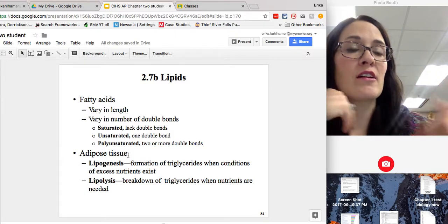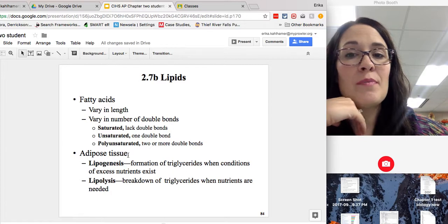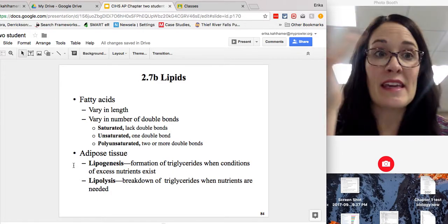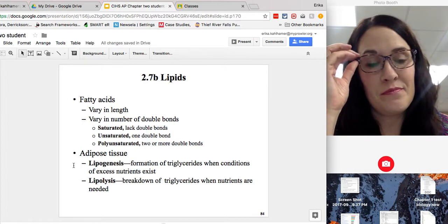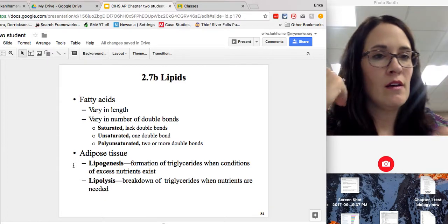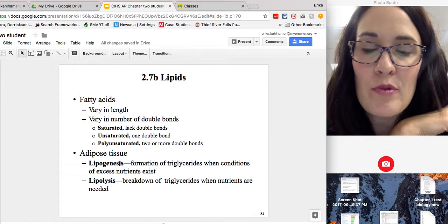Adipose tissue. So the fat in our body is called adipose tissue. Lipogenesis. If you have excess nutrients, so I eat more carbohydrates, fats than my body can store or use, excess is going to be stored in your adipose tissue. It's called lipogenesis.